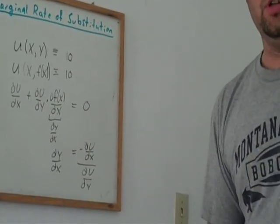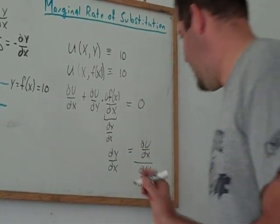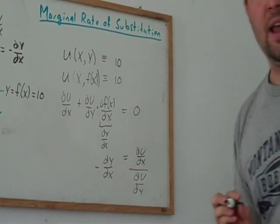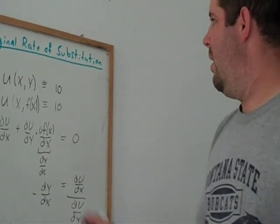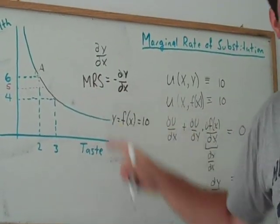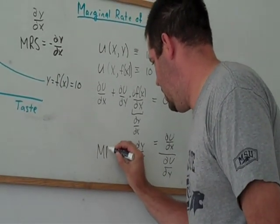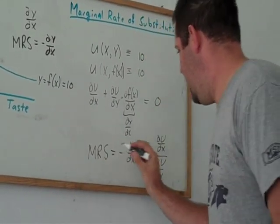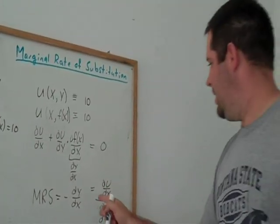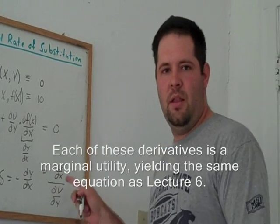Now notice we can multiply both sides by negative one. Get rid of that negative there, and that will give us a negative of the slope. Well, remember when we started here? We have the negative of the slope, and we call that something, that's our marginal rate of substitution. Our marginal rate of substitution equals negative dy/dx, and it equals this derivative divided by this derivative.